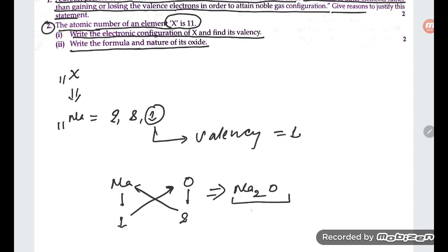So this is the formula of oxide. And you know student, metal oxides are basic in nature. So this oxide is going to be basic in nature. Metal oxides are basic in nature.